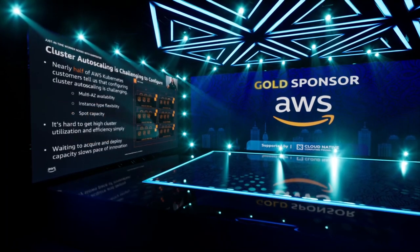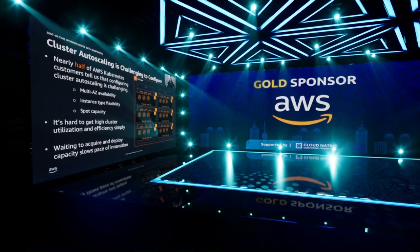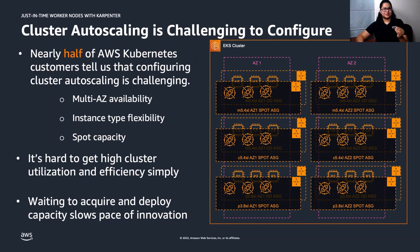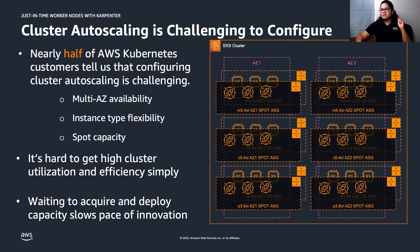As you just saw, Cluster Autoscaler relies on the concept of node groups and EC2 Auto Scaling Groups to manage cluster capacity. It assumes that instance types are all identical in a given group. So if you want to use a node group with mixed instance types, you need to make sure each type has roughly the same amount of CPU and memory resources. Otherwise, resources might be wasted or insufficient during a scale-up. To support different instance types, you need multiple node groups.